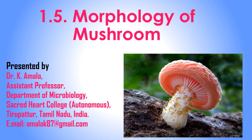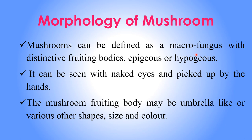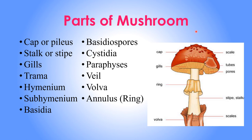Welcome back to the next lesson on the topic: morphology of mushrooms. Mushrooms contain different parts, and from this lecture we are going to learn about them. Mushrooms are macro fungi with distinctive fruiting bodies. The fruiting body is the fleshy part — it may be epigeous, where germination starts from above ground level, or hypogeous, where germination starts from below ground level. Mushrooms can be seen with the naked eye and picked by hand. The fruiting body may be umbrella-like or different shapes, colors, and sizes.